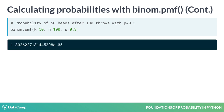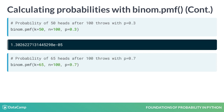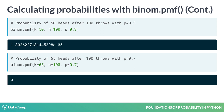If instead you calculate the probability of getting 65 heads from 100 flips of a biased coin with 70% probability of getting heads, you see that it's almost 5%. As n gets larger, the probability of getting k heads becomes smaller for the same p.